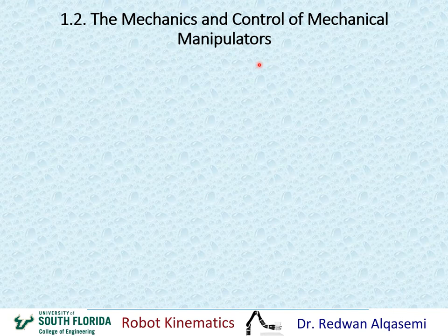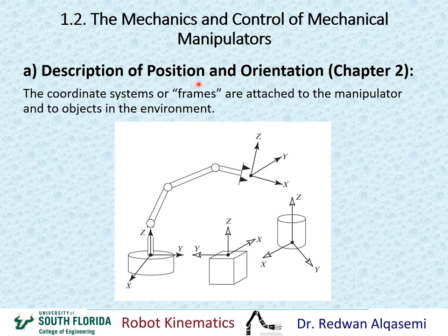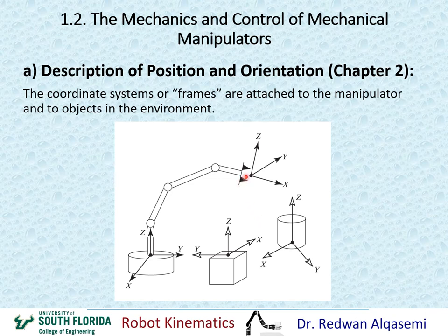Now let's talk about what's covered in the textbook. One of the first things we want to address is the description of position and orientation. In a robotic arm, we attach frames to the arm, to objects, and to the ground, and then we try to define these coordinate frames relative to each other. This allows us to do controls and move one coordinate frame into another using the robotic arm.